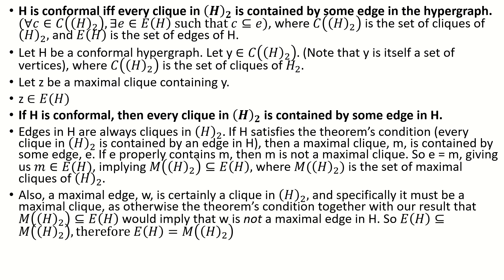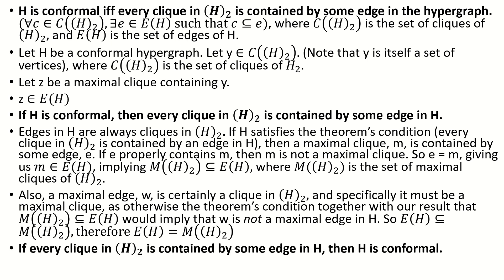Also, any maximal by inclusion edge w must be a clique in the two-section. But it also has to be a maximal clique in the two-section, because otherwise there'd be a clique larger than w in the two-section that contains w. And by our theorem's condition, we can then conclude that there's an edge larger than w that contains w, which contradicts the fact that w is a maximal edge. So it must be that the set of maximal edges of h and the set of maximal cliques of the two-section are the same, which is just another way of saying h is conformal.